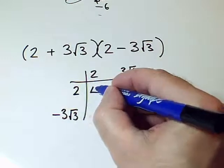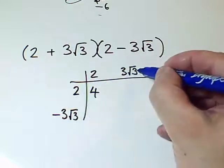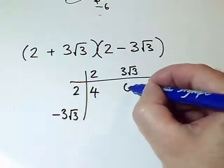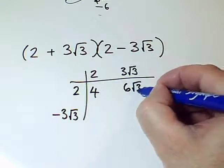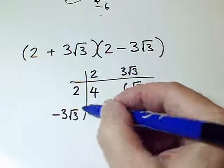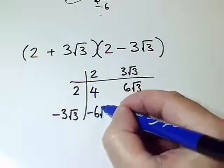2 times 2 is easy, that's 4. 2 times 3 root 3, well, 2 times 3 is 6, so that's 6 times root 3. And this is the same except with a minus sign, so this is minus 6 root 3.